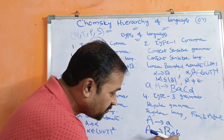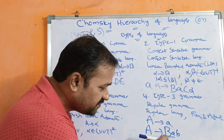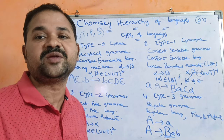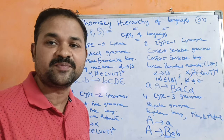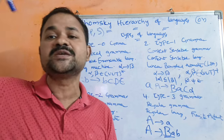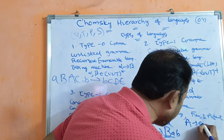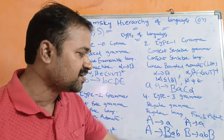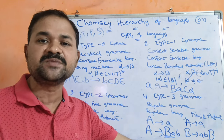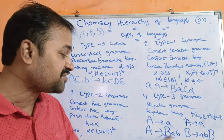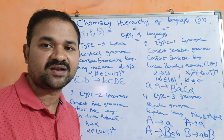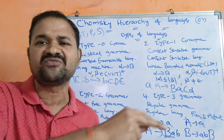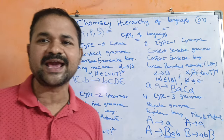Left linear grammar means the leftmost symbol is a non-terminal. In right linear grammar, the rightmost symbol is a non-terminal. For example, A implies aA and B implies bB — these are right linear grammars because the rightmost symbol is a non-terminal. So this is about Chomsky Hierarchy of Languages. Mainly we have four types of grammars and their corresponding languages, and this is also called types of languages.